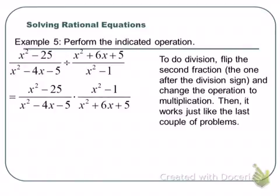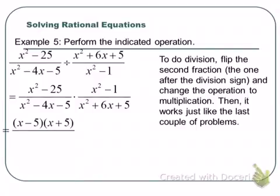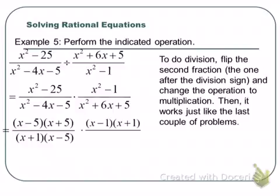After keep-flip-change we'll have x squared minus 25 over x squared minus 4x minus 5, times x squared minus 1 over x squared plus 6x plus 5. Because we have a rational expression, we're going to have to factor everything. We can only simplify rational expressions by canceling common factors, and we can only find common factors by factoring. x squared minus 25 factors as x plus 5 times x minus 5. x squared minus 4x minus 5 factors as x minus 5 times x plus 1. x squared minus 1 is the difference of squares. x squared plus 6x plus 5 is x plus 5 times x plus 5.